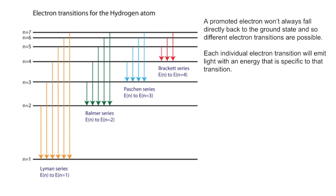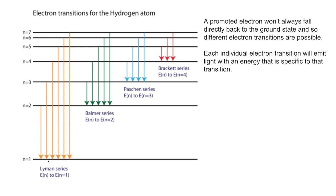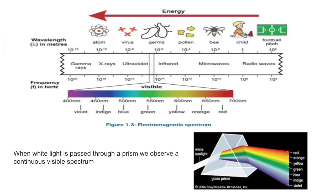When electrons fall back down to lower energy levels they emit energy, and depending on the transition — the energy level they fall back to — a different amount of energy is released. If we look at this diagram, going from N2 to N1 releases less energy than going from N3 to N1. This is important because different electron transitions emit different energies of light, meaning different wavelengths of light, and we can use these to identify different elements and compounds.